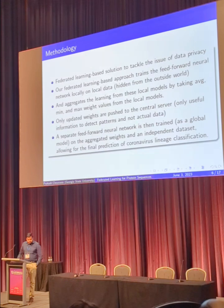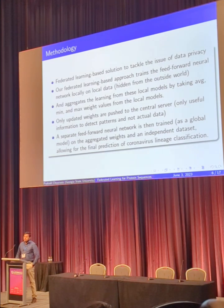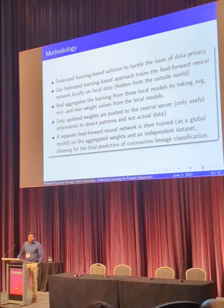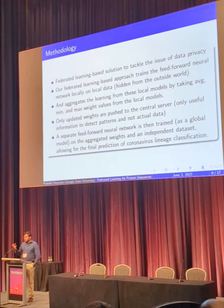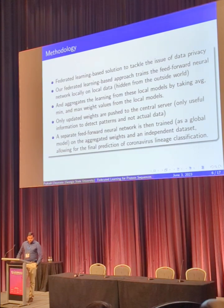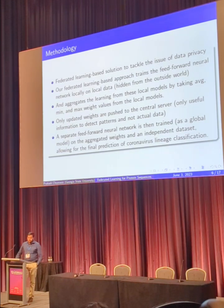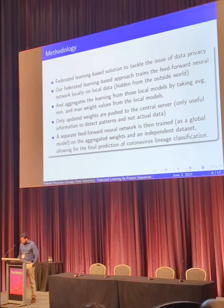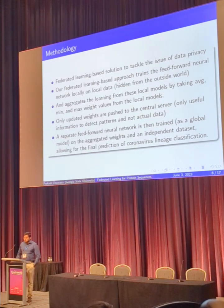Moving forward, a federated learning-based solution will tackle the issue of data privacy since countries need not explicitly declare that they found a new variant or a new lineage. They can just train the model and the model weights will be transmitted. The useful knowledge will be extracted in the form of model weights and can be used by other countries with a local model. Our approach uses a separate feed-forward neural network at the local level and at the global level, aggregating model weights and transmitting them to the global server, where the global model adapts knowledge from the local ones.